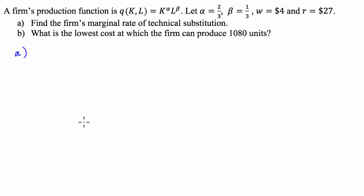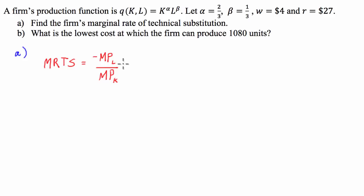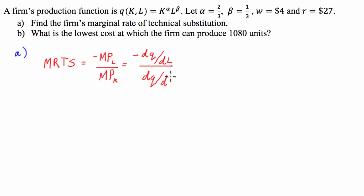To find the firm's marginal rate of technical substitution, we're going to make use of the relationship: the marginal rate of technical substitution is equal to the negative marginal product of labour divided by the marginal product of capital. This can be found by taking the opposite of the derivative of output Q with respect to labour, divided by the derivative of output with respect to capital.